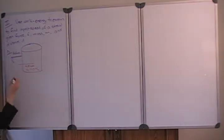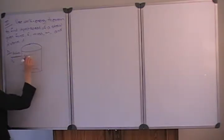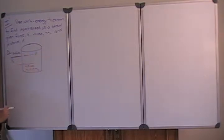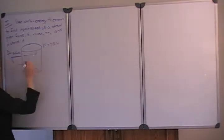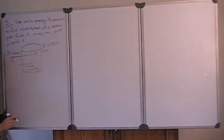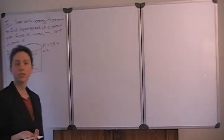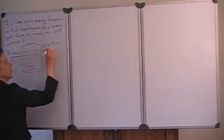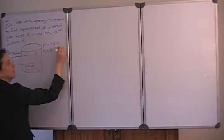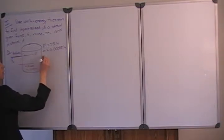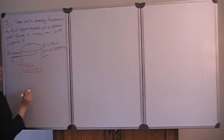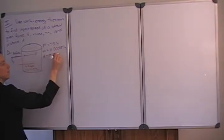We know that the straw stopped, so we indicate that the final velocity is 0 meters per second. The tree trunk exerts a force opposing the movement of the straw, equal to 75 newtons. The mass of the straw is 0.55 grams, which we convert to 0.00055 kilograms for MKS units. The distance the straw is driven into the tree is 4.5 centimeters, which converts to 0.045 meters.